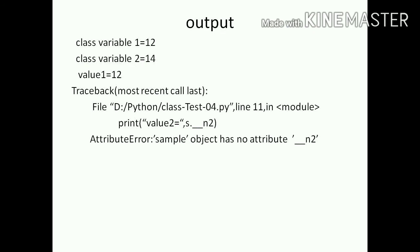The first two lines of output display the results from the Display method. From outside the class, the first print result shows the value equal to 12. The next print result tries to access n2, but since n2 is private, that is outside class access, and an error message will be displayed.